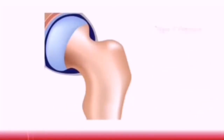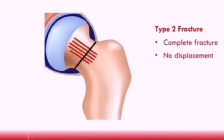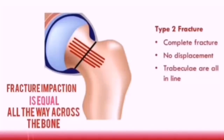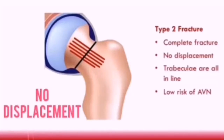A Garden's type 2 fracture is a complete fracture but with no displacement. Looking at the trabeculi, they are all in line because the fracture impaction is equal all the way across the bone. Again, there is a low risk of avascular necrosis with this type of fracture because there is no displacement.